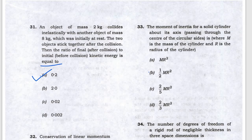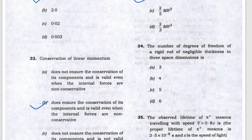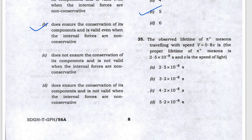Next, the moment of inertia for a cylinder — it is (1/2)mr². The number of degrees of freedom of a rigid rod is 5.